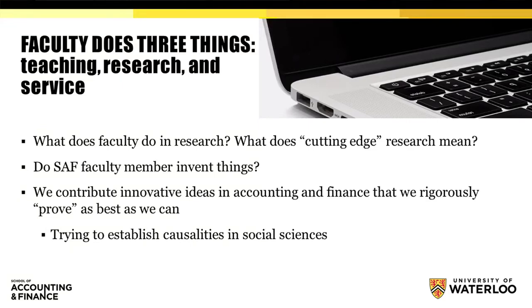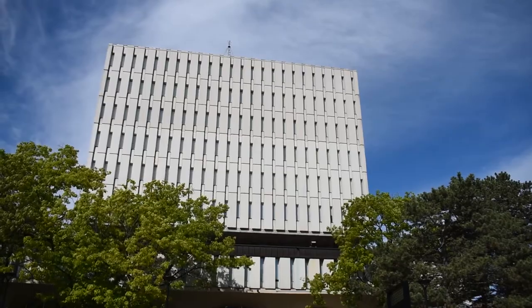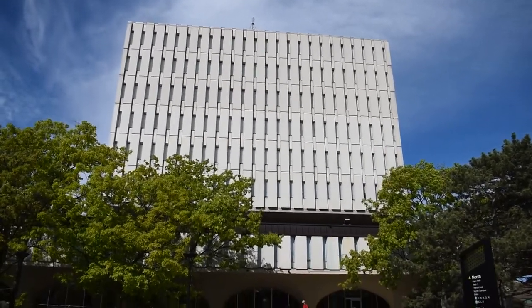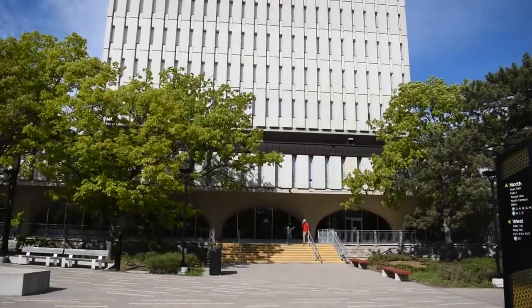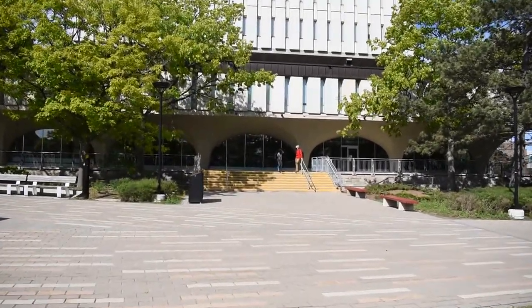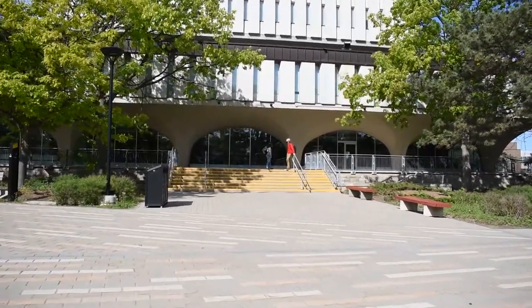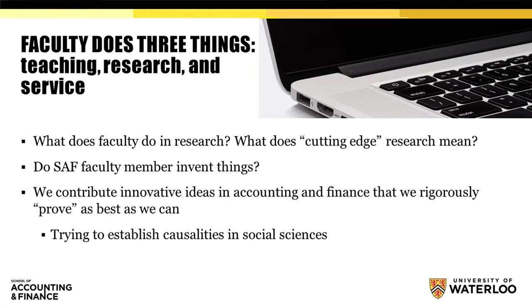What to research on in finance, for example? We try to establish causalities in social sciences and prove that causality as much as possible. One particular means to prove such causality is to use so-called big data. And as a matter of fact, we have been using big data for decades, starting from the 1960s and 1970s.